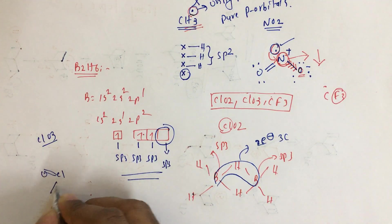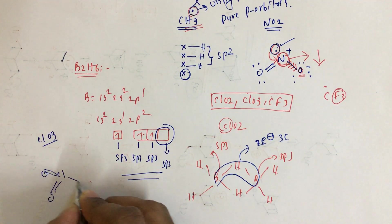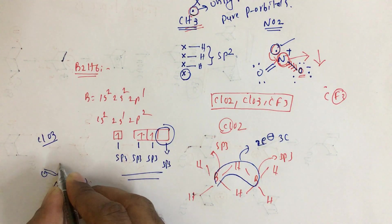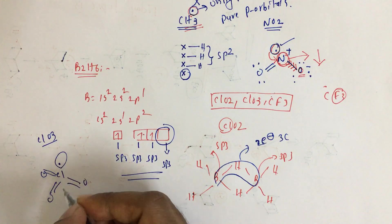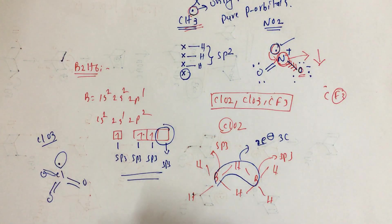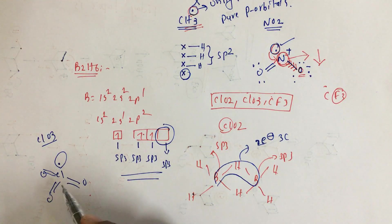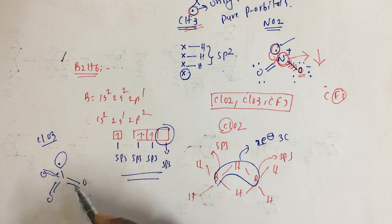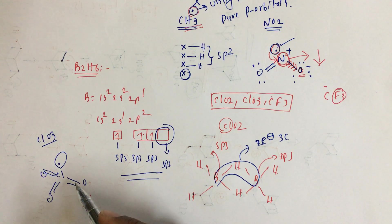For ClO3, the structure has Cl double bonded to O. The odd electron on chlorine also involves in hybridization because chlorine is attached to the highly electronegative oxygen.